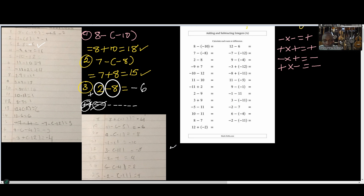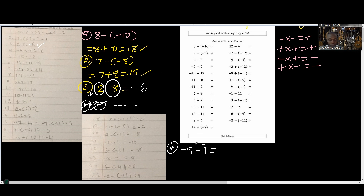Let's look at number 4. We have negative 9 and positive 7. How many negatives? 9. How many positives? 7. The negative has the higher population, so the answer is going to be a negative sign. If we take 7 negatives to cancel 7 positives, we have 2 negatives remaining. So our answer is minus 2. Is that clear? Yes.